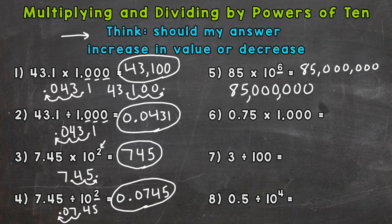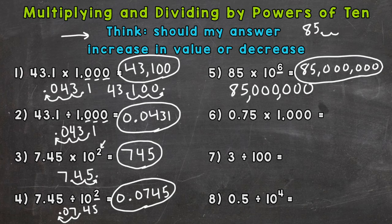Now I mentioned moving the decimal for the whole number — it gives us the same thing. A decimal comes right after a whole number, so I can place the decimal and move it six times: 1, 2, 3, 4, 5, 6 — then fill with zeros, which gives us the same result as just putting those zeros on the end. So 85 million for number 5.